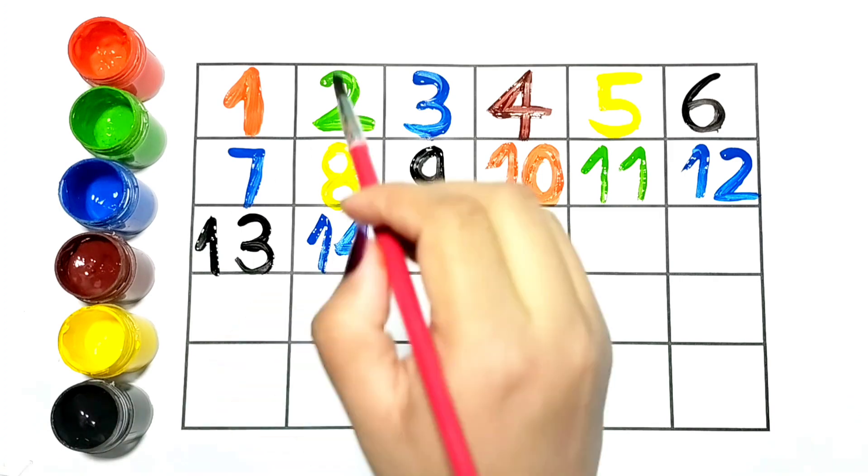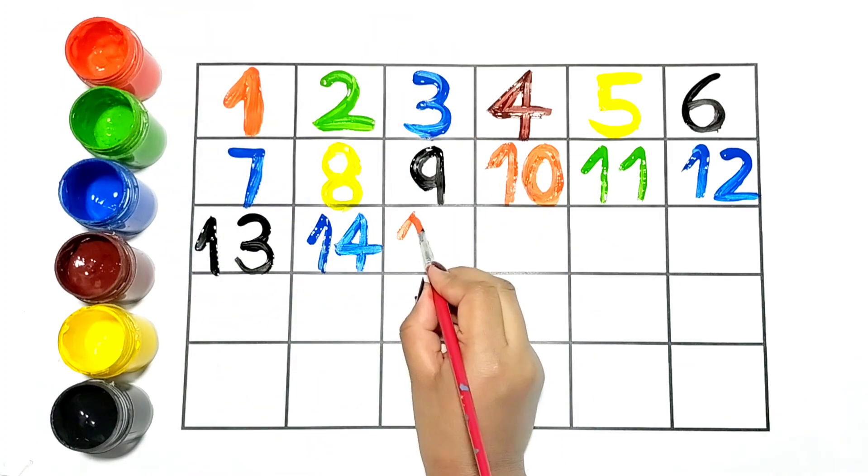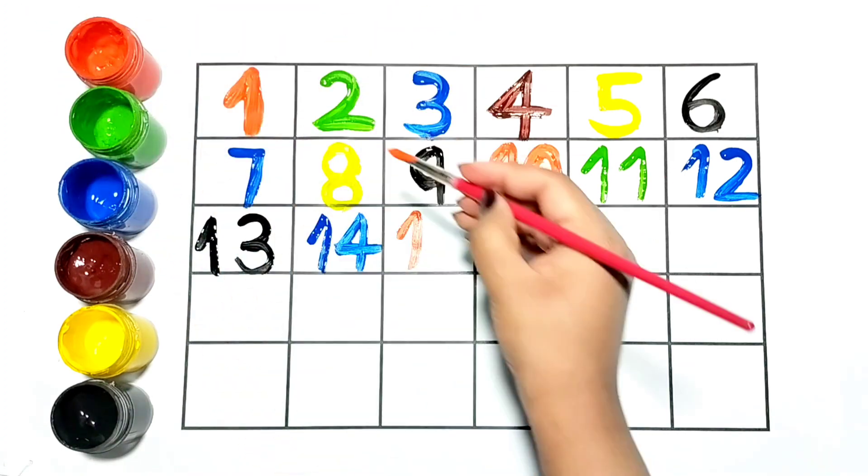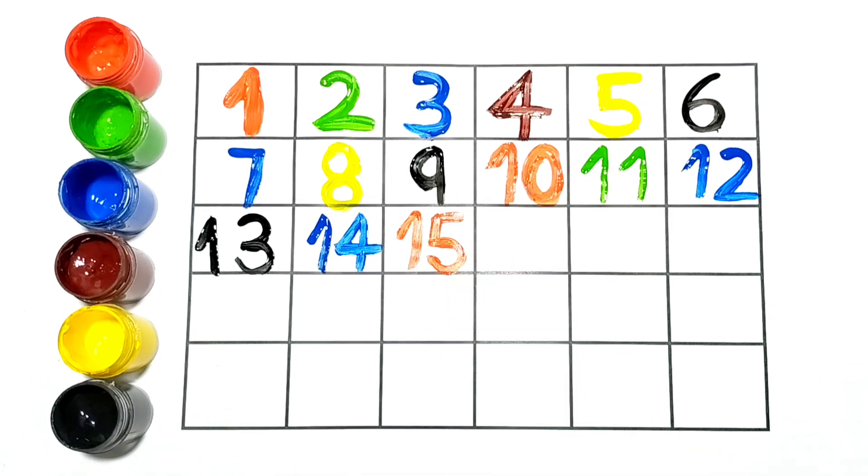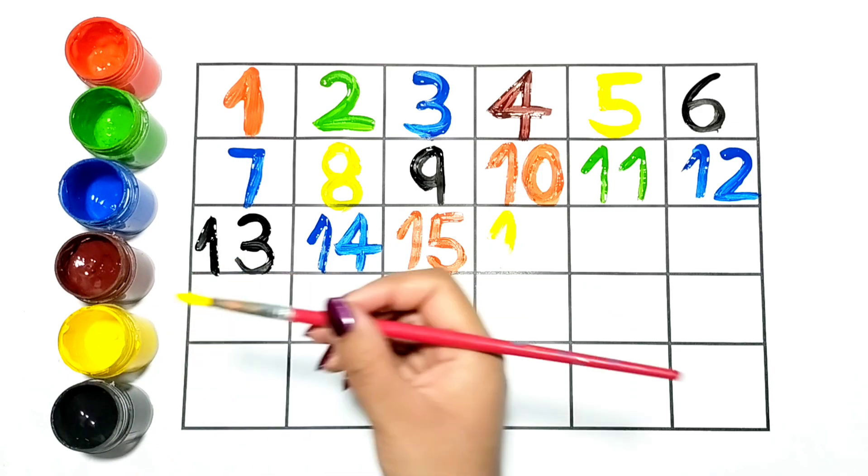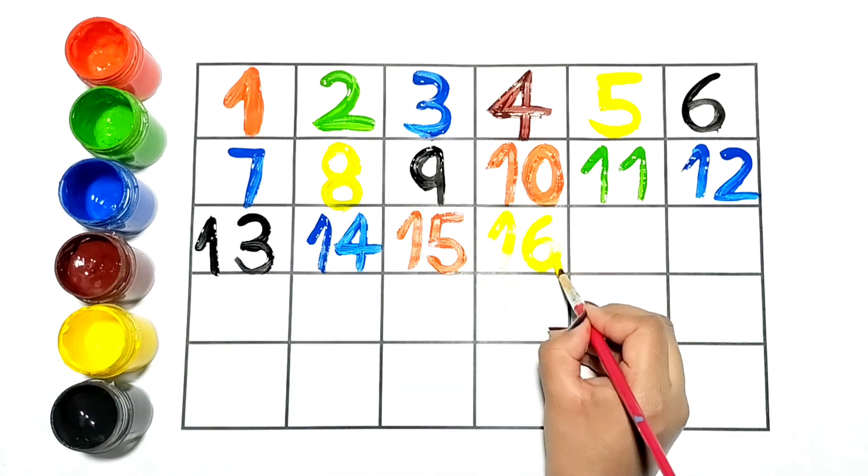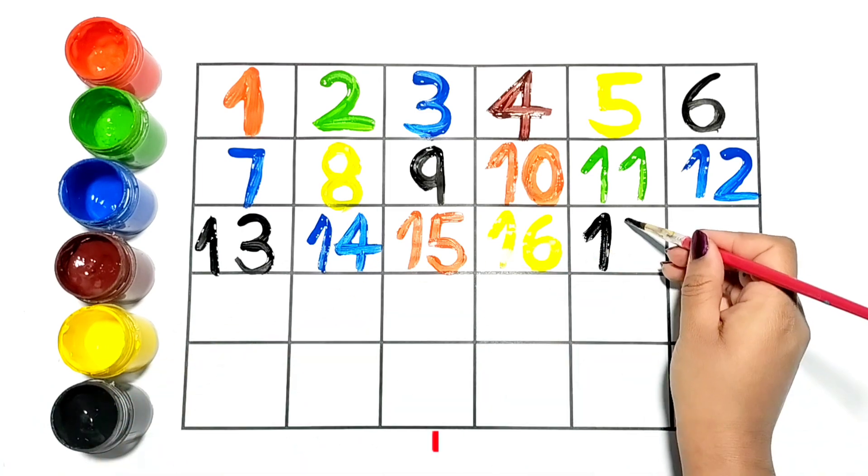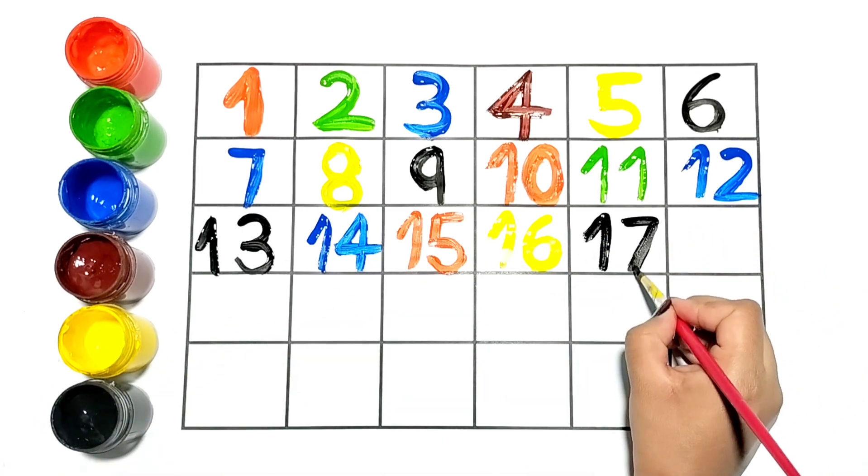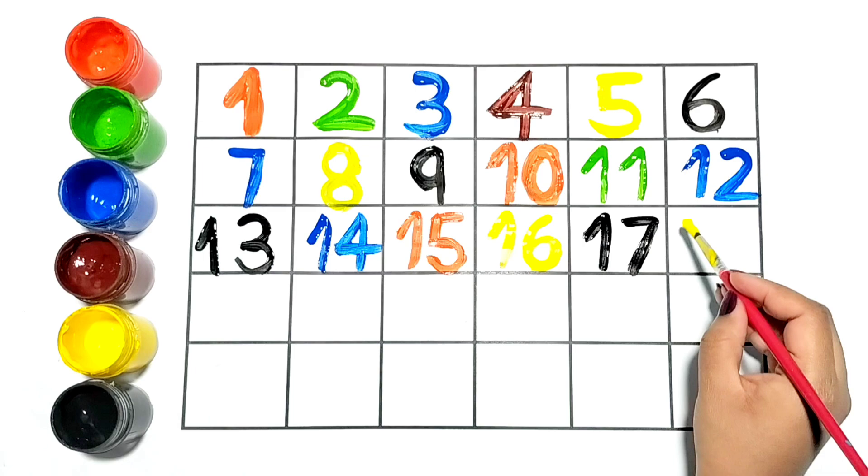Thirteen. Now I am writing 15. This is number 15. It is in orange color. I am writing 16 with yellow color. Next number is 17, black color. Now let's write 18.